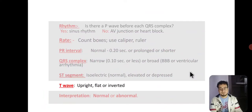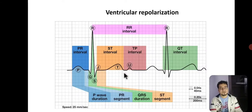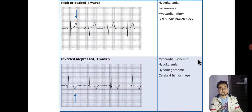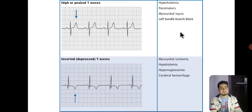After completing ST segment analysis, we move to the T wave. Examine its contour and orientation — whether it is positively or negatively deflected. The T wave represents ventricular repolarization, and it is usually upright in lead 2. Tall or peaked T waves indicate a problem such as hyperkalemia, ischemia, myocardial injury, or myocarditis. Left bundle branch block typically presents with peaked T waves in leads V1, V2, V3.